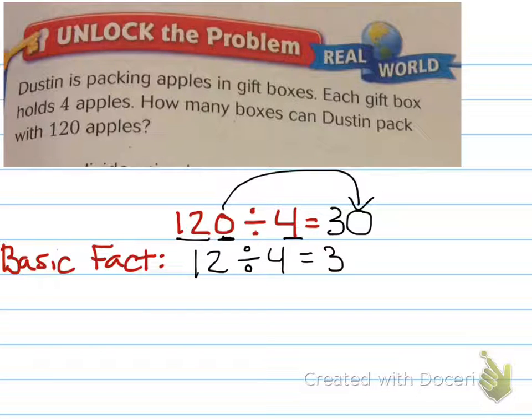Now, think in your head, to check, four times thirty, four times three is twelve, bring the zero over, 120. Yep, I'm right.